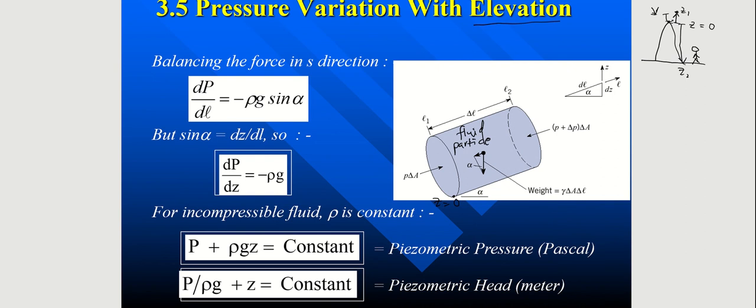And then on the other side, you have P plus delta P times area. So delta P is because of the change in the pressure, as you go, as the position of the other side here is higher than another side.